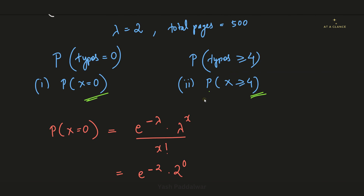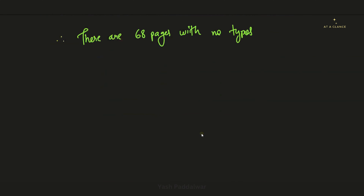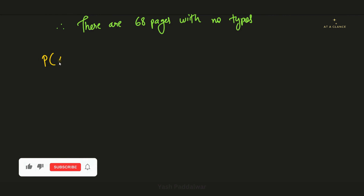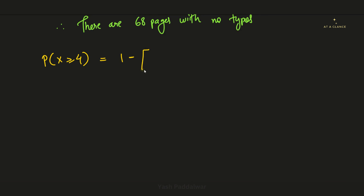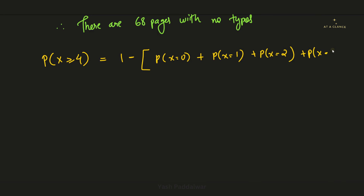Now for the second condition, probability at x greater than or equal to 4, we again use the complement: 1 minus [P(x=0) + P(x=1) + P(x=2) + P(x=3)]. With lambda equals 2, we calculate all four terms and sum them.